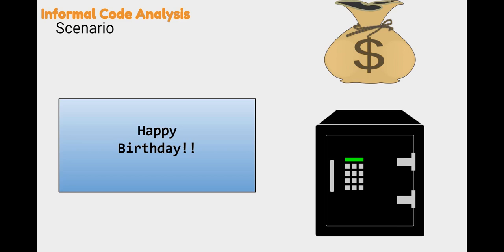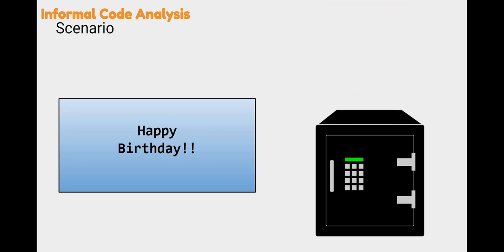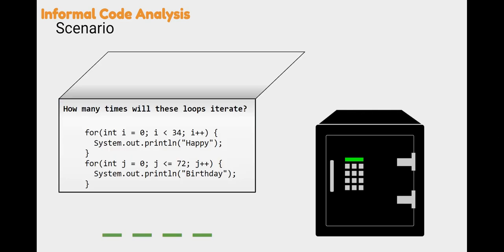Imagine for a moment it is your birthday, and I tell you that I have a bag of money for you, but I'm going to lock that bag of money into a safe, and the four-digit code to that safe is in your birthday card. So you open up your birthday card and you find this question: how many times will these loops iterate? By determining how many times these two loops iterate, you will get a four-digit code that opens the safe. Look at those two loops, see if you can determine how many times each of them iterate, and get that four-digit combination.